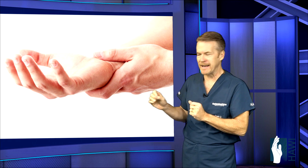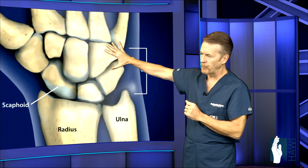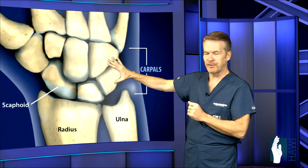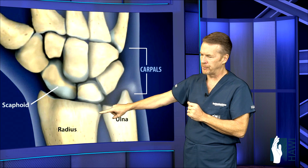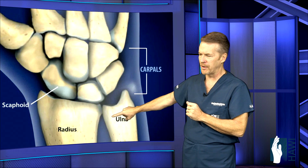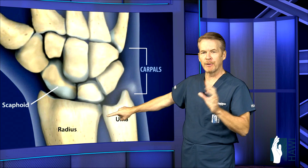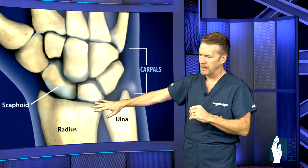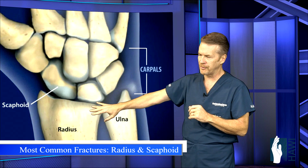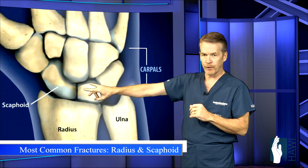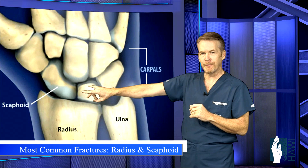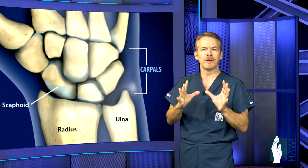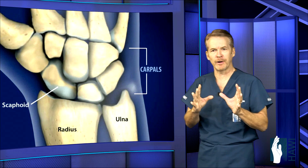Let's look at the anatomy of the wrist. These are the carpal bones — there are eight bones that sit on top of the two forearm bones, the radius and the ulna. The most common fractures in the wrist involve the radius first and the scaphoid second. These are the two most common bones we're going to concentrate on.